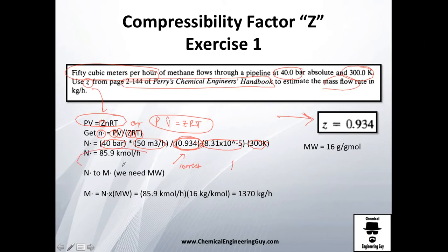So yeah, you got 85.9 and we want to change it to mass, so just multiply by the molecular weight of methane which is 16 kilograms per kilo, and you get 1370 kilograms per hour. And yeah, if you will use ideal gas law, you will have 7% less of this value, which I'm not telling you is wrong, I'm just telling you that this will be more approximate the real value.